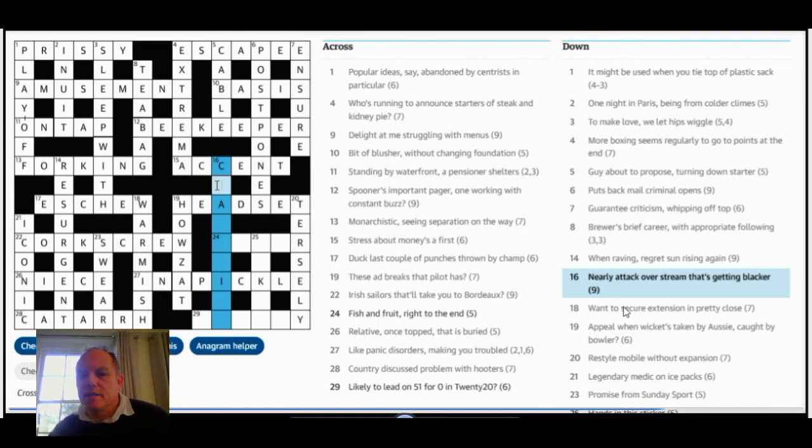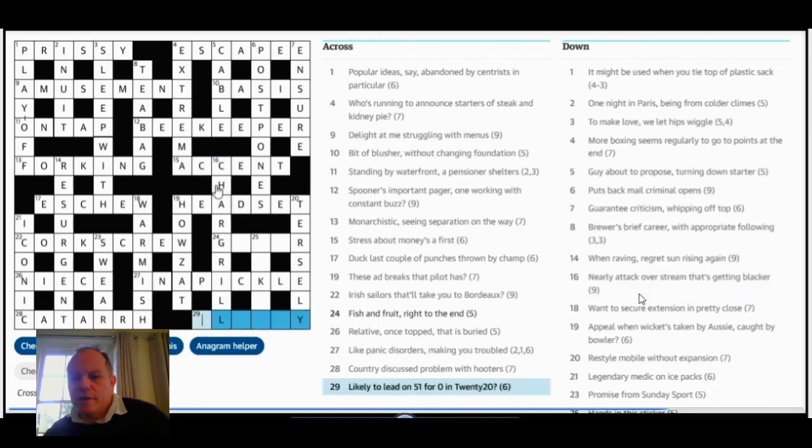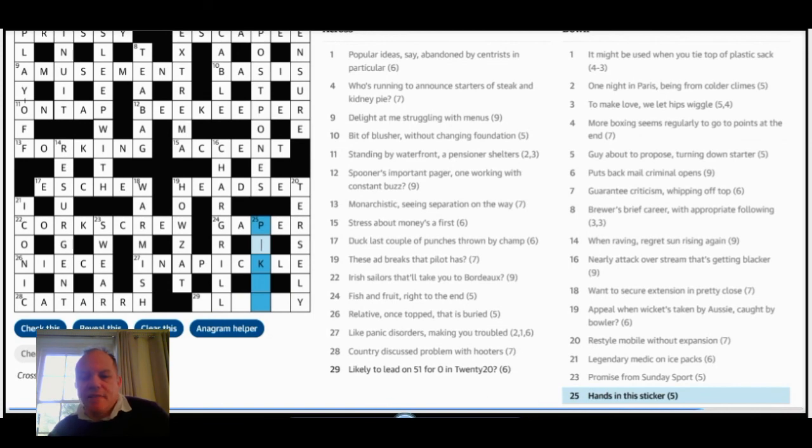16 across was charge without the E and rill, and that gives you chargrill. That's getting blacker and something that gets things blacker. Still can't do 29 across. 24 across the fish, I suppose I've heard of a gaper. And I had to think of that to realize that the fruit was a grape with right to put to the end. 25 down, hands in this sticker. Well, luckily, the letters P and K are very suggestive. And if that leads you eventually to think of poker, then you might realize that's something that sticks something, sort of, and that you get hands in this in the sense of poker as a card game.